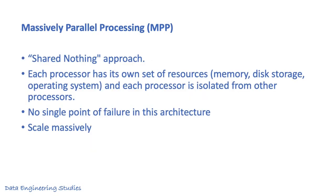Massively Parallel Processing, that is MPP architecture, on the other hand, is a shared nothing architecture. Each processor has its own set of resources such as memory, disk storage, and operating system. So each processor is isolated from other processors.